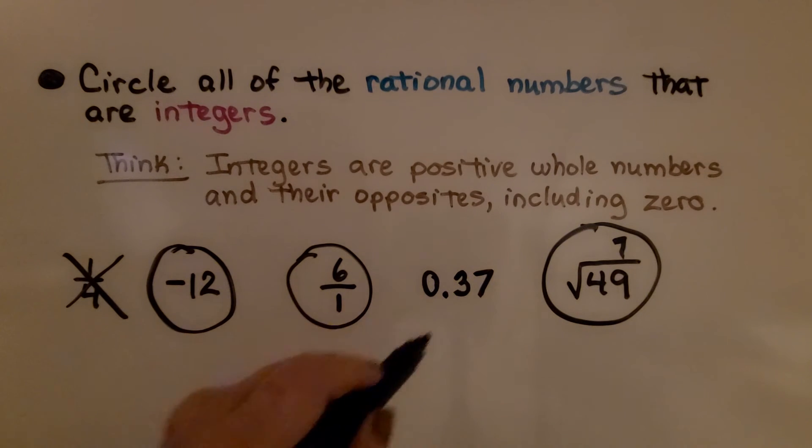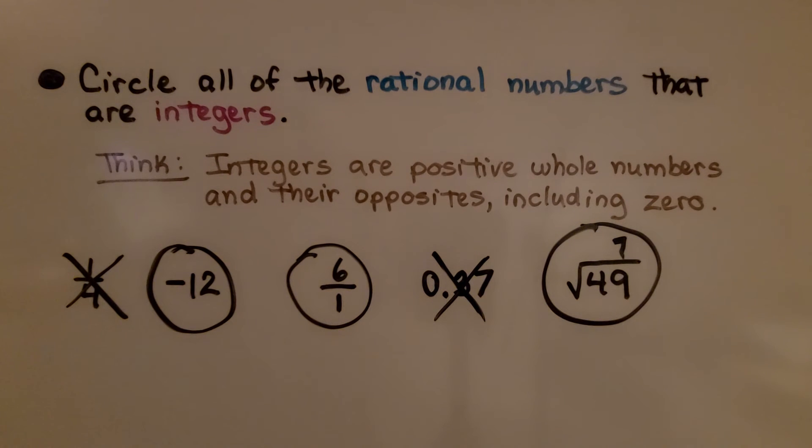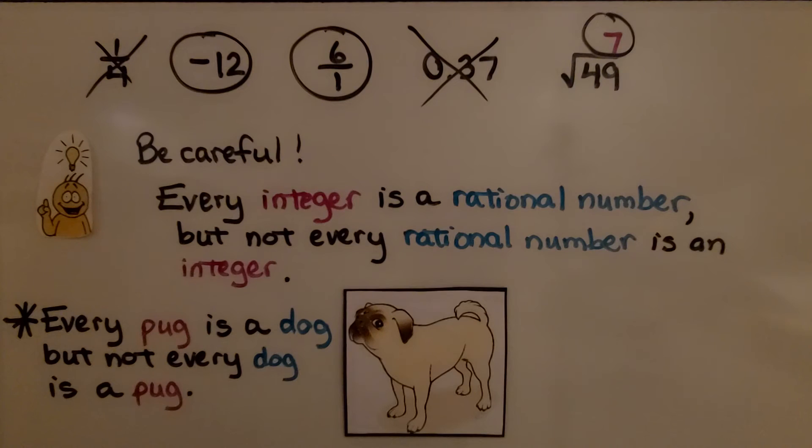So all of these were rational numbers, but the circled ones were rational numbers that are integers. Be careful though. Every integer is a rational number, but not every rational number is an integer. One-fourth is a rational number, and 37 hundredths is a rational number, but they're not integers. Look at it as every pug is a dog, but not every dog is a pug.